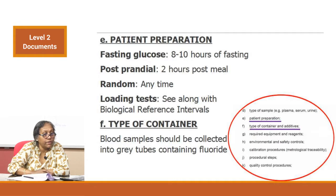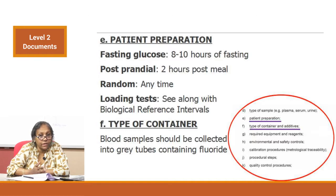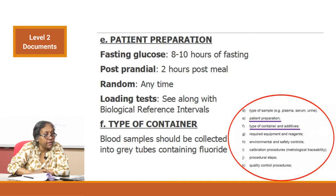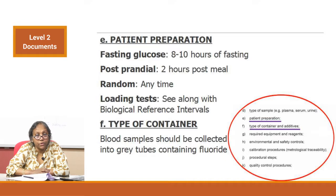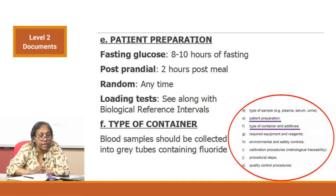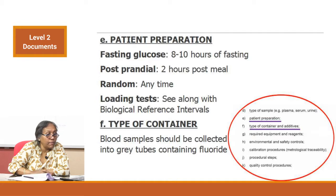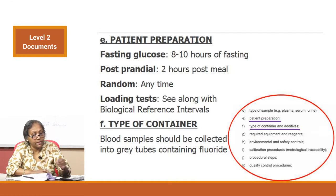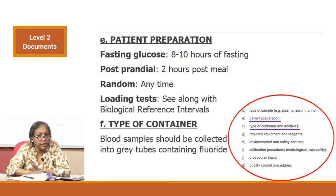Sub-clause E is patient preparation and sub-clause F is type of container and additive — both addressed together. Patient preparation: for fasting glucose, 8 to 10 hours of fasting; post-prandial, 2 hours post-meal; random, any time. For loading tests such as glucose tolerance test and glucose challenge test, there are different requirements. The SOP should also reference the biological reference interval section. For type of container: blood samples should be collected in fluoride tubes. All these things should be very clearly described in your SOP.